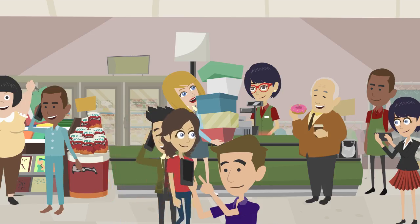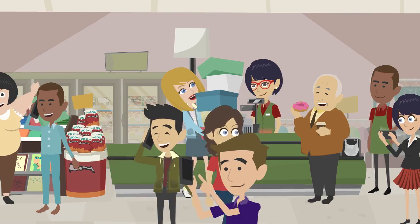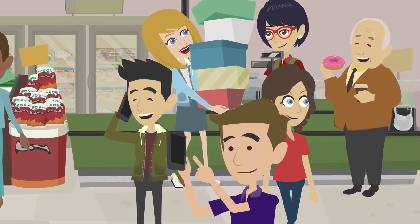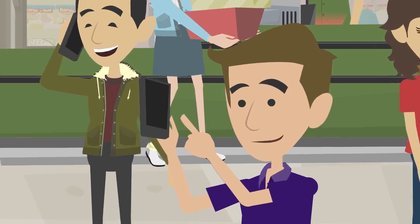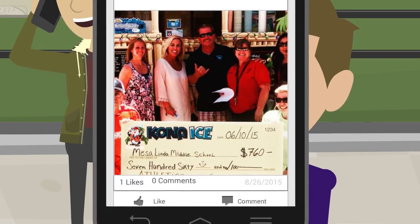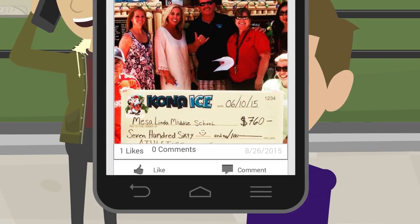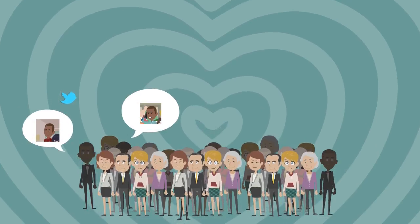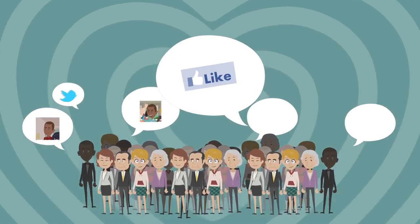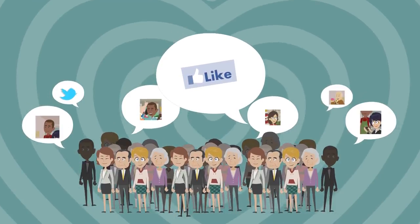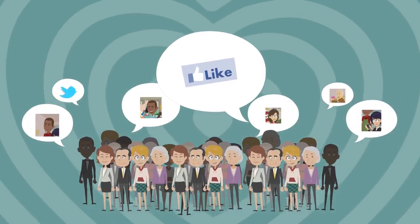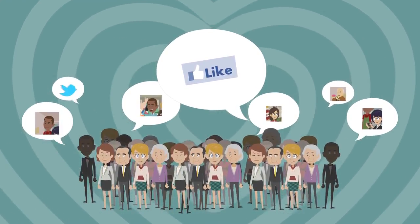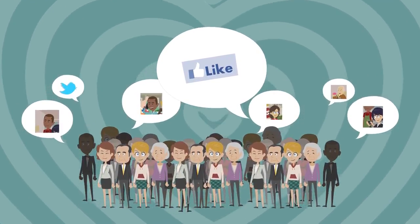When members attend Bob's event, they can comment on and like each other's posts in the members-only community feed and spread the word to their friends, reaching twice the audience that Bob could reach on his own.